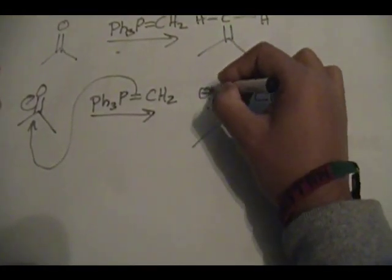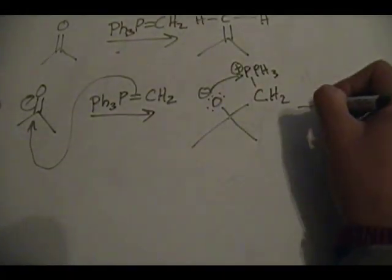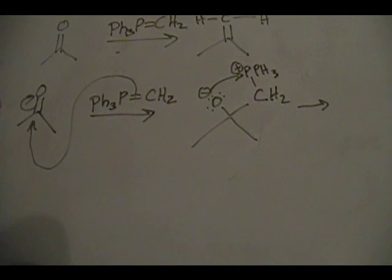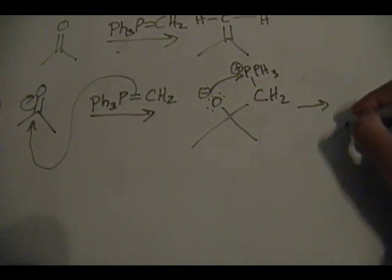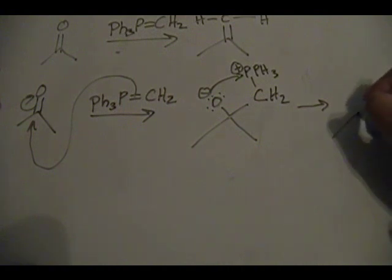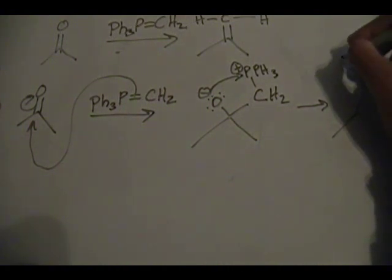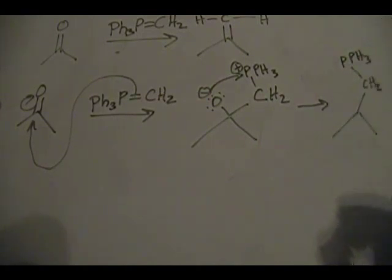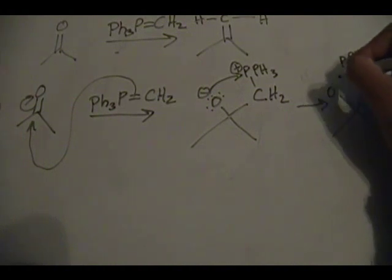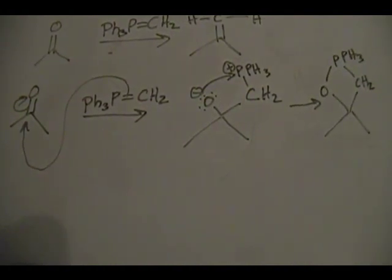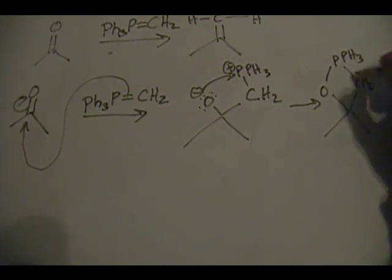Now what happens is you have one of these lone pairs that attacks the phosphorus of the PPh3, and you get a cyclic intermediate.